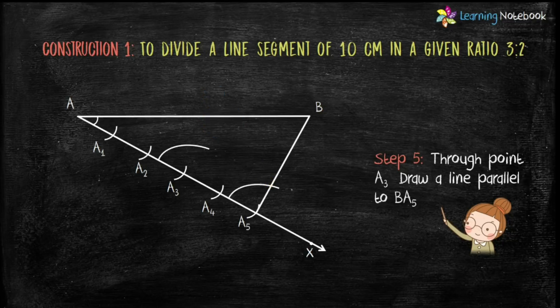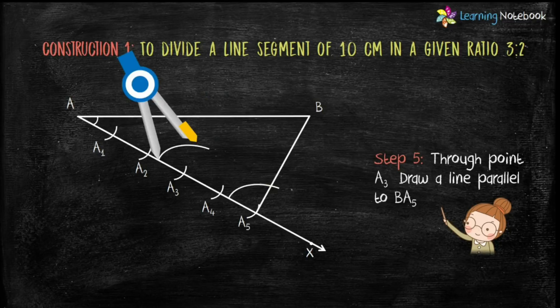Now, keeping the same radius at the end of the arc drawn at A₃, cut this arc. Through this point, draw a line to join point A₃.